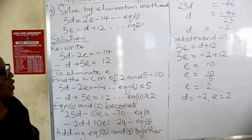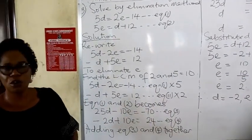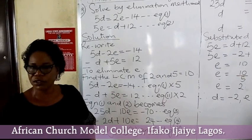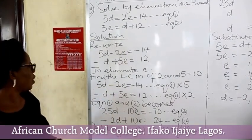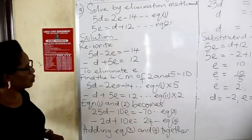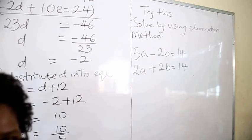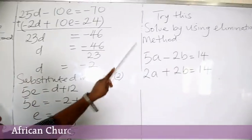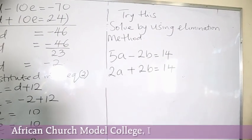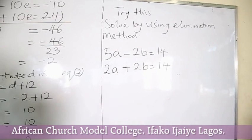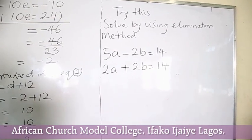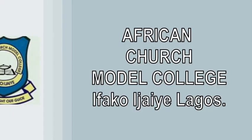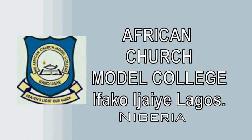That will be the end of today's topic. I hope you have been able to gain one or two things. In solving simultaneous linear equations using the elimination method, you need to consider the numerical values in the two equations before you can eliminate any variable. Now, since we understand how to solve simultaneous equations, try this practice question using the elimination method: 5a minus 2b equal to 14, and 2a plus 5b equal to 14. Drop your answers in the comment box.